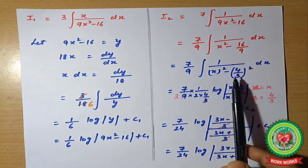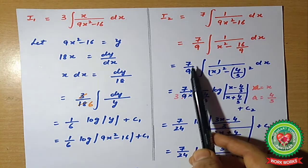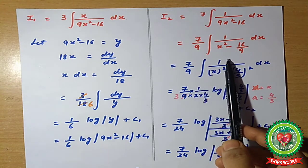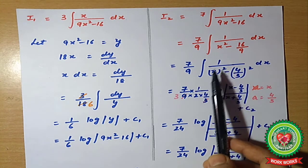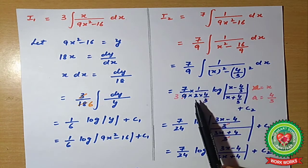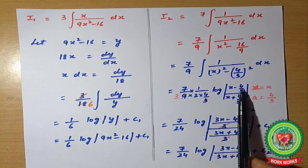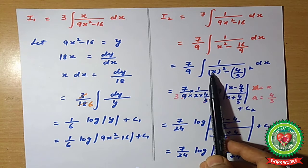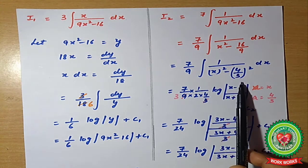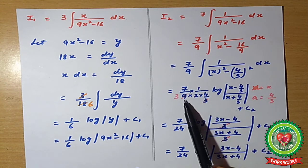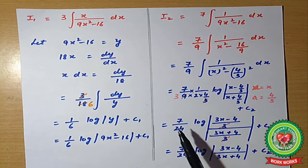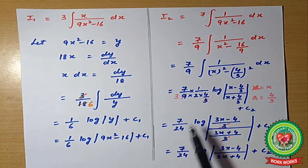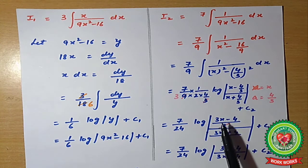Now, 16/9 can be written as (4/3)². So it becomes (7/9) ∫ 1/(x² − (4/3)²) dx. Using the formula ∫ 1/(x² − a²) dx = (1/2a) log|(x − a)/(x + a)| + C, where a = 4/3, we get (7/9) × (1/(2 × 4/3)), which simplifies to 7/24. The log term becomes log|(3x − 4)/(3x + 4)|.